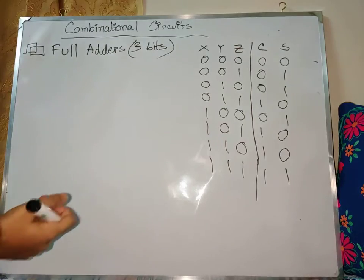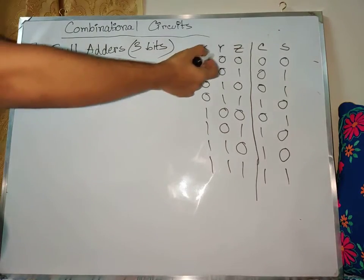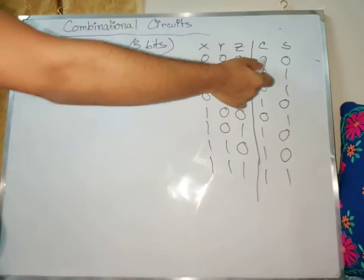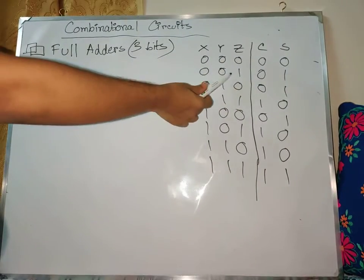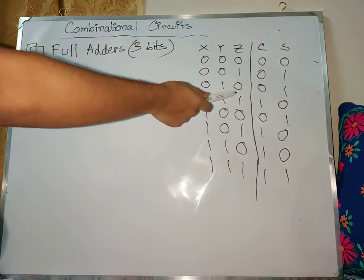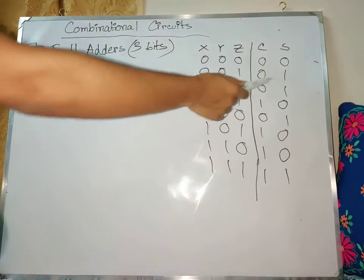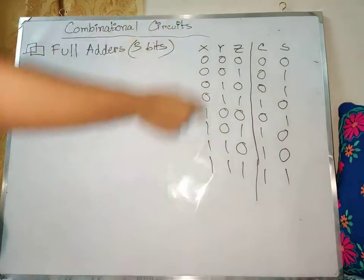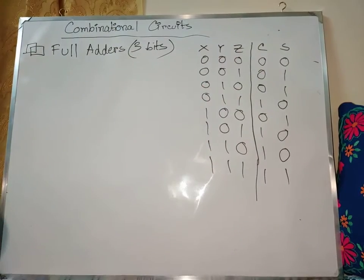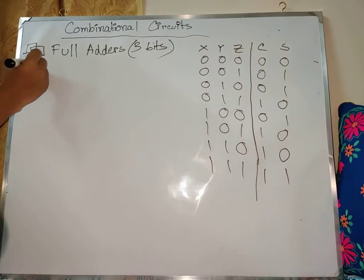Basically, 3-bit combinations are like 0,0,0 and we enumerate all possible combinations through the truth table for the full adder.